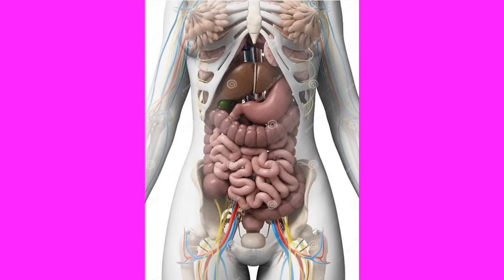Did you know the word organelles literally means little organs? Organelles, be they mitochondria, ribosome, Golgi apparatus or Golgi bodies, endoplasmic reticulum, or nucleus, have their own morphology. On the other hand, the word physiology has a different meaning and is not used interchangeably with the word anatomy or morphology.